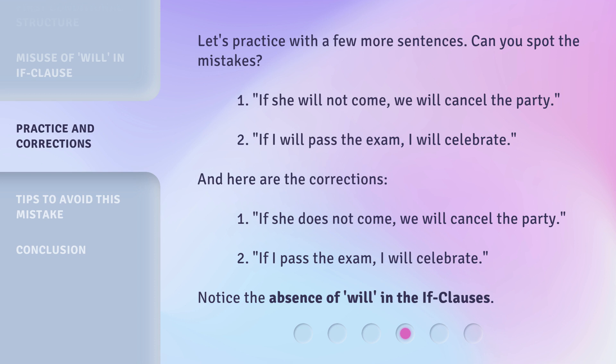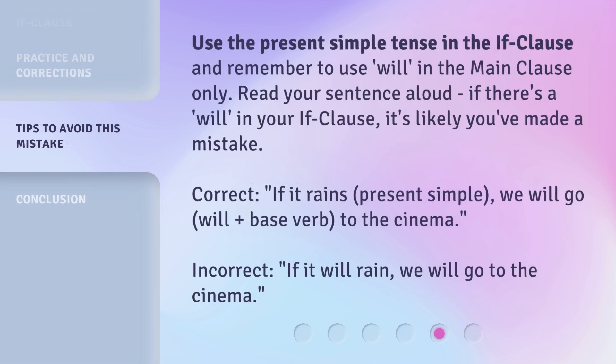Notice the absence of 'will' in the if-clauses. Use the present simple tense in the if-clause and remember to use 'will' in the main clause only. Read your sentence aloud — if there's a 'will' in your if-clause, it's likely you've made a mistake.